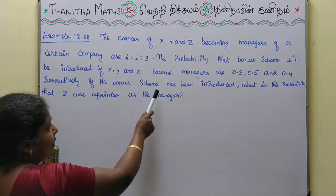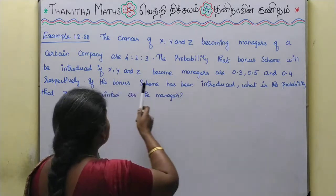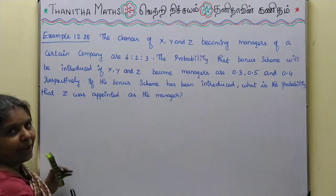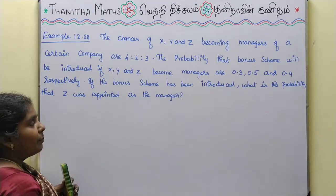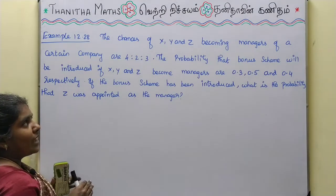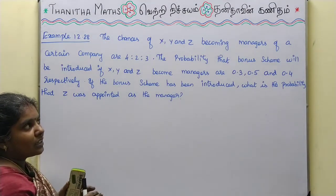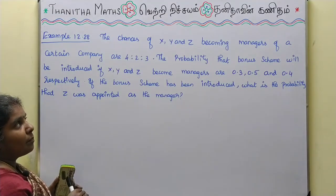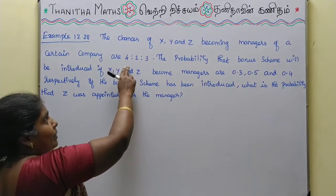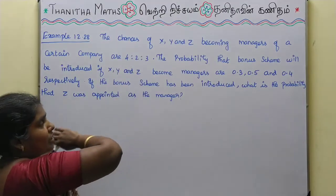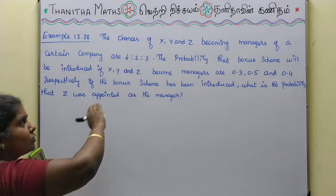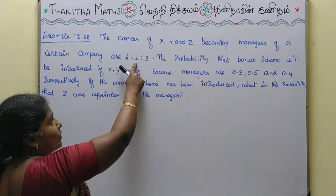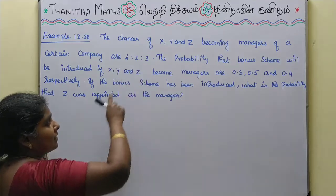If the bonus scheme has been introduced, what is the probability that Z was appointed as the manager? The possibilities of X, Y and Z being appointed are in ratio 4:2:3. Adding all the chances: 4 plus 2 is 6, 6 plus 3 is 9.